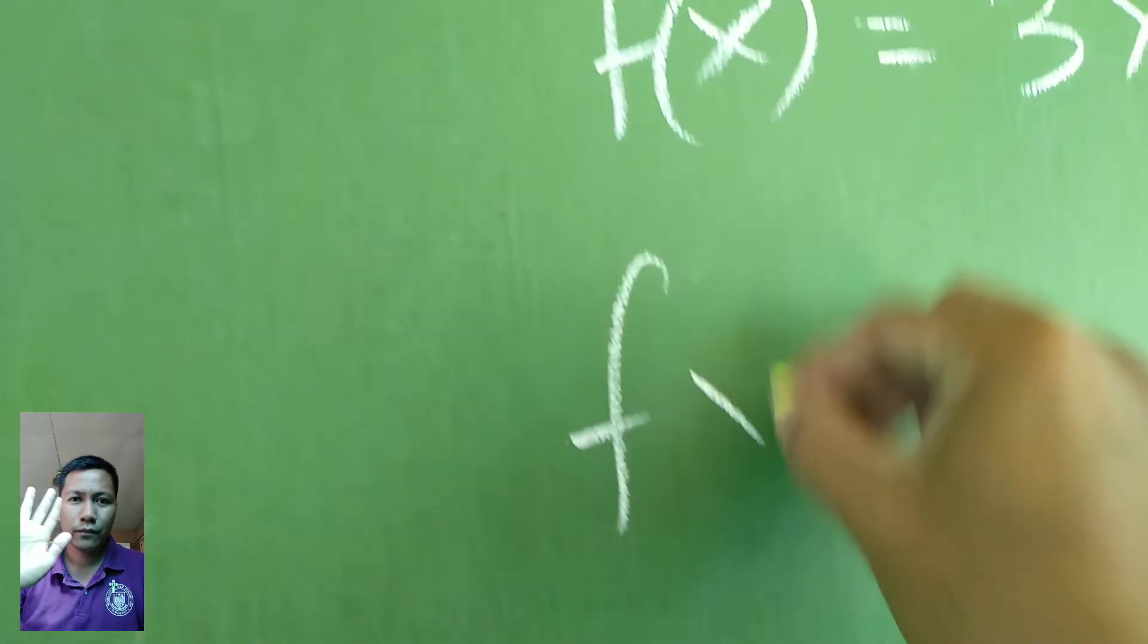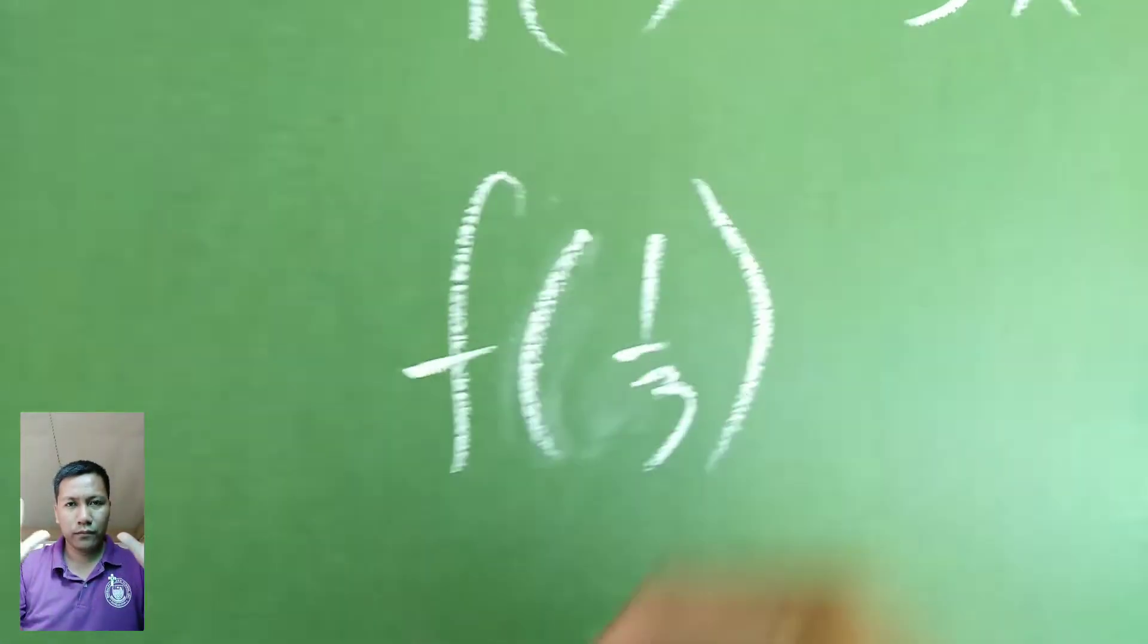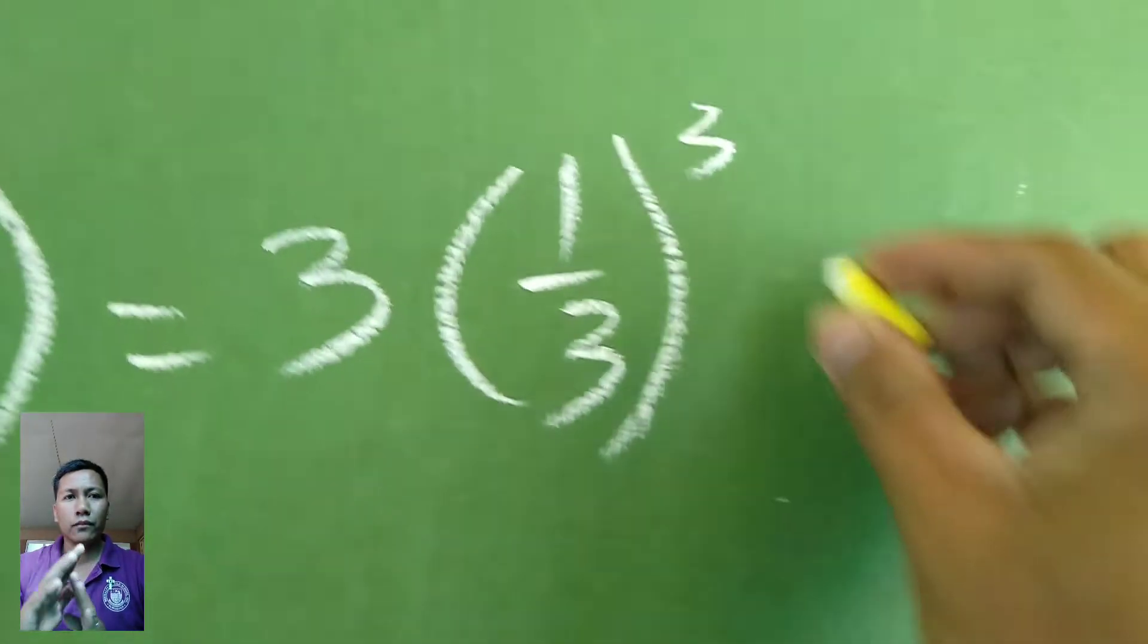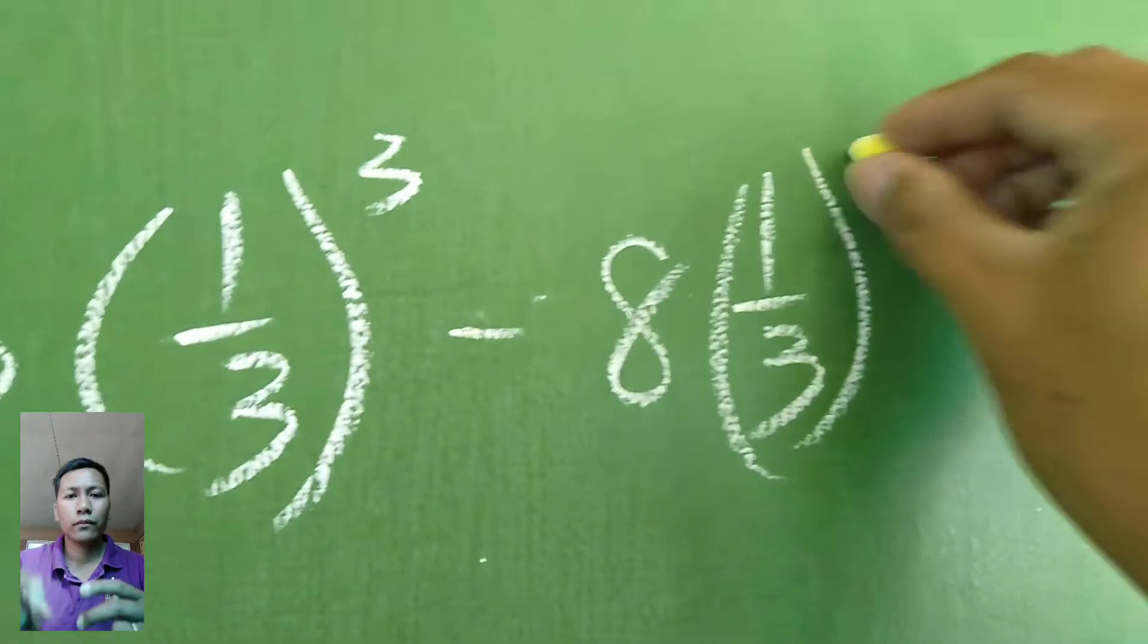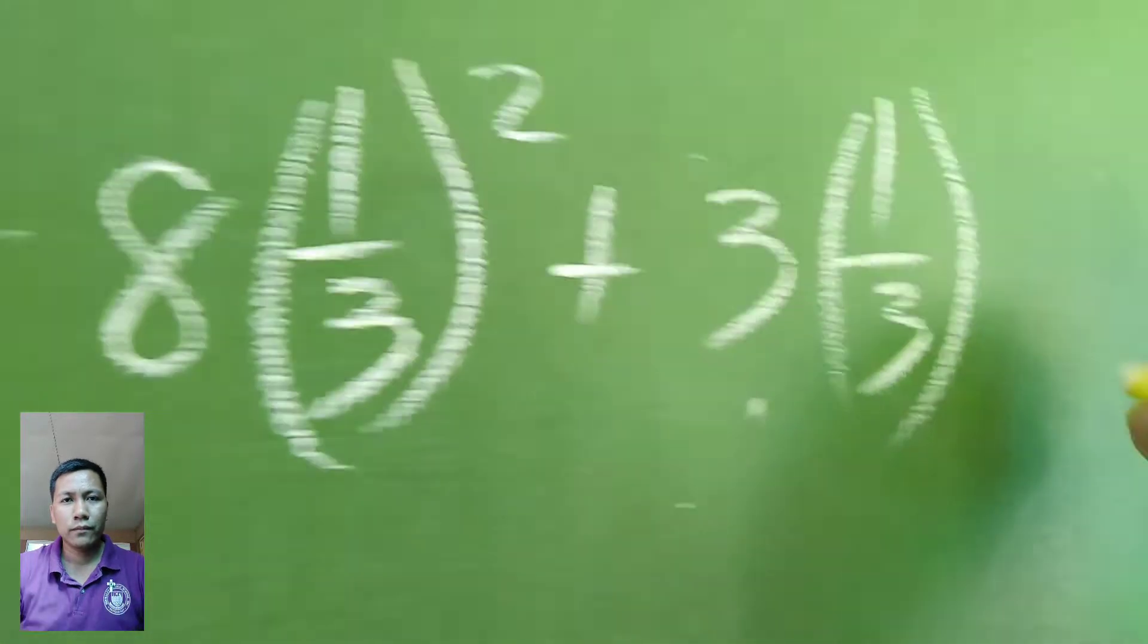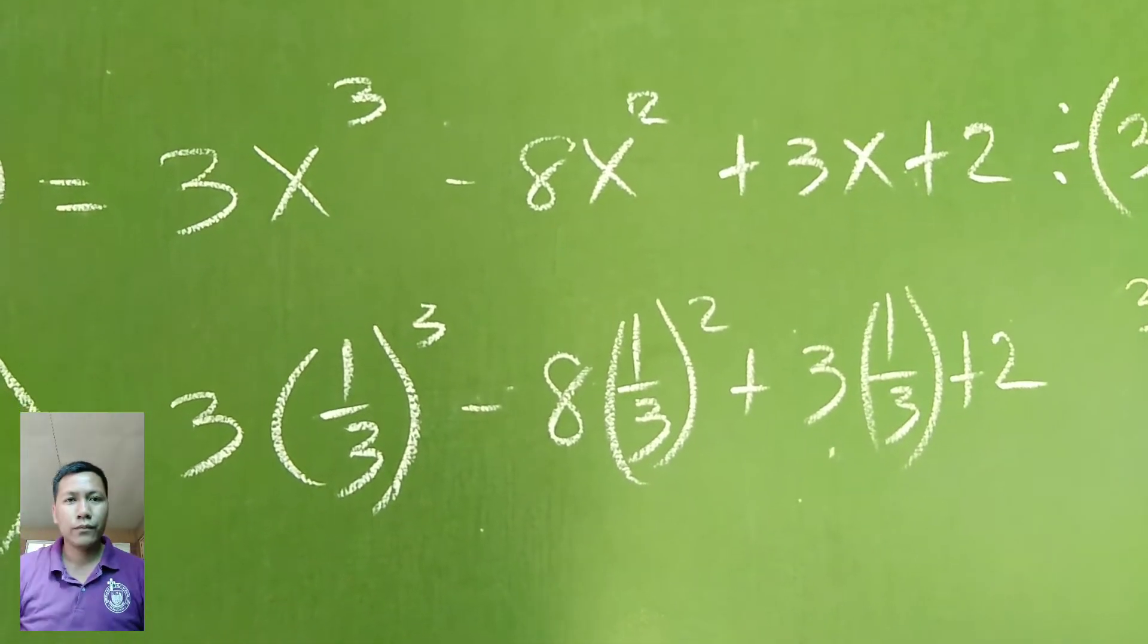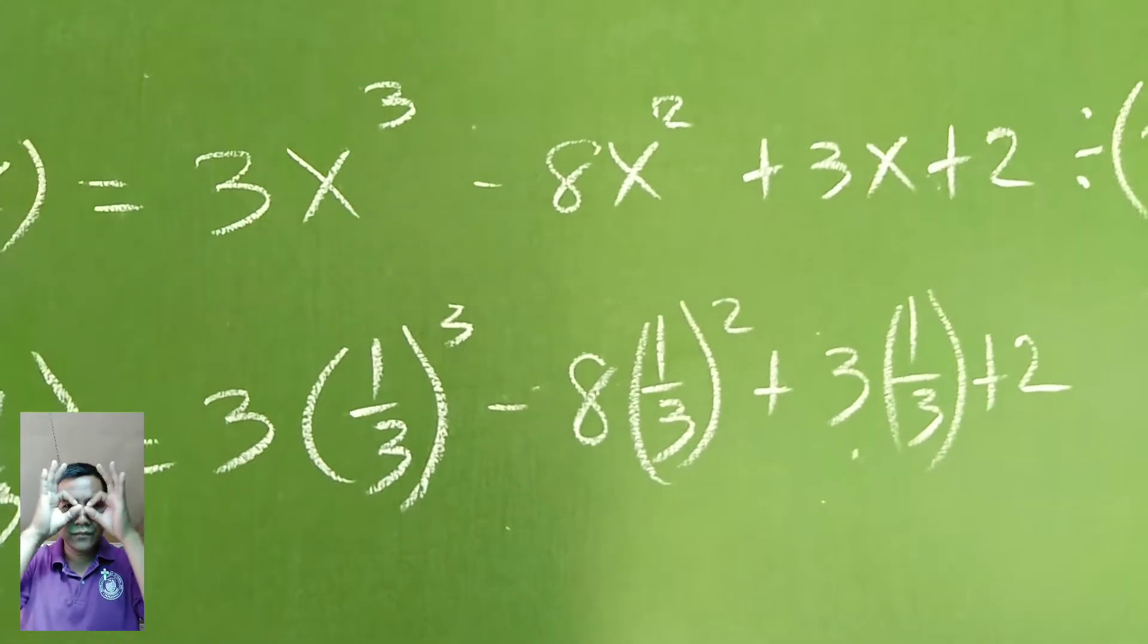So we have f of x or f of 1 third. All the x values we'll replace with 1 third equals 3 times 1 third cubed minus 8 times 1 third squared plus 3 times 1 third plus 2. All the x values I replaced with 1 third and then simplify.